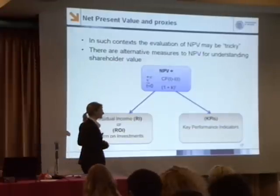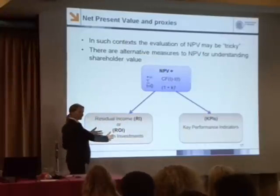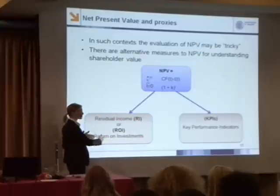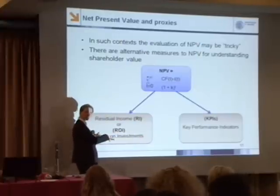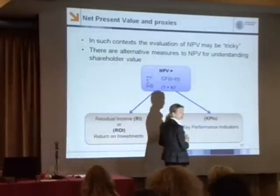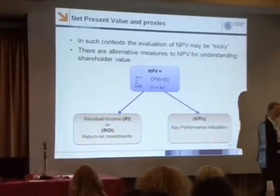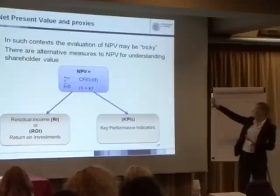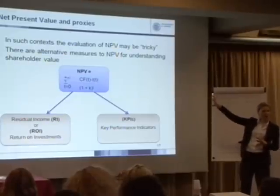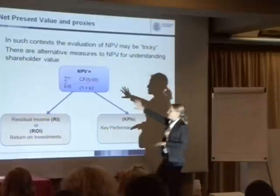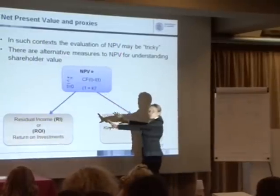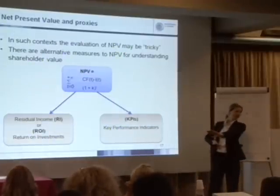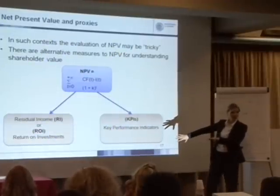There are two alternative measures — there are many, but two main ones. On one side we have something which is very rough and not very precise: return on investment. We won't tackle this today but tomorrow morning. On the other side, there is something I like very much: key performance indicators. So when we are in an uncertain, complex situation, this calculation is very difficult, and companies very often go for these two roads — return on investment or residual income — or key performance indicators.